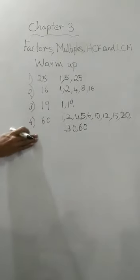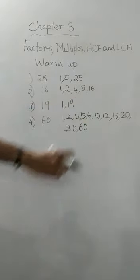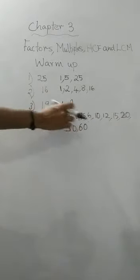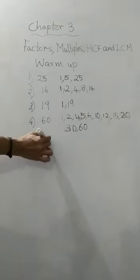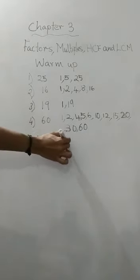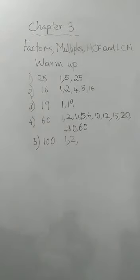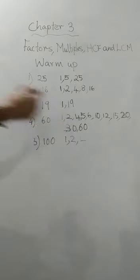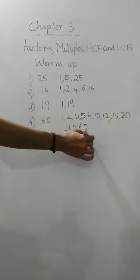Next one. Some numbers have many factors. This is having only 2 and this is having 11 factors. Now, let us go to the last number, 100. 1 will be a factor. It's an even number, so 2 also. And 25 into 4 is 100, so 4 is also a factor.